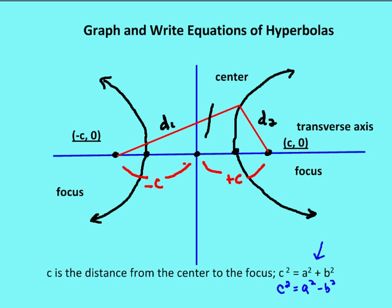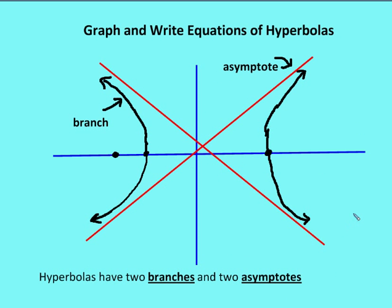Another key characteristic of a hyperbola is the asymptotes. An asymptote is a line which the graph gets closer and closer to but never touches. The asymptotes serve as a framework for the branches, showing where they go but never reach. I've drawn my two asymptotes in red — those are the lines which the branches of the hyperbola approach but never quite touch.